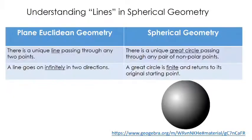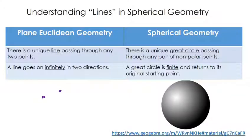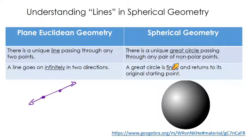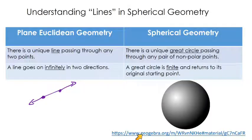Let's examine and compare spherical geometry to Euclidean geometry. The first thing to understand is what lines are — in quotes — because in normal Euclidean geometry, there's a unique line passing through any two points, and that line extends infinitely in both directions. In spherical geometry, there's a unique great circle passing through any pair of non-polar points. A great circle is like a line, except that while a line goes on infinitely in both directions, a great circle is finite and returns to its original starting point.